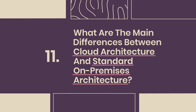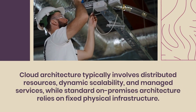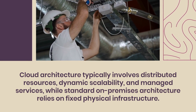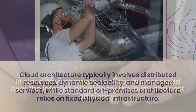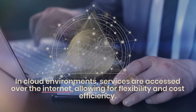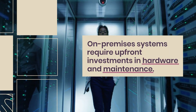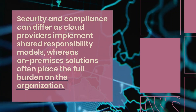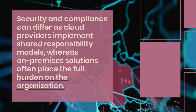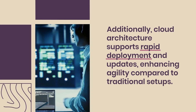11. What are the main differences between cloud architecture and standard on-premises architecture? Cloud architecture typically involves distributed resources, dynamic scalability, and managed services, while standard on-premises architecture relies on fixed physical infrastructure. In cloud environments, services are accessed over the internet, allowing for flexibility and cost efficiency. On-premises systems require upfront investments in hardware and maintenance. Security and compliance differ as cloud providers implement shared responsibility models, whereas on-premises solutions place the full burden on the organization. Cloud architecture also supports rapid deployment and updates, enhancing agility.